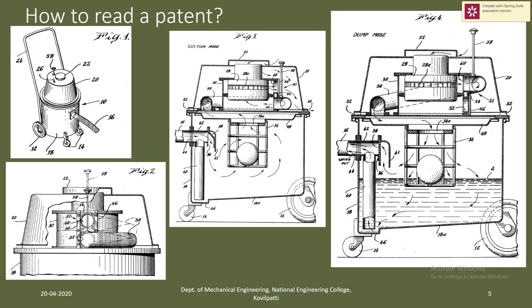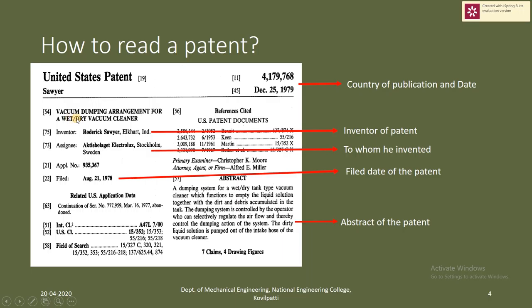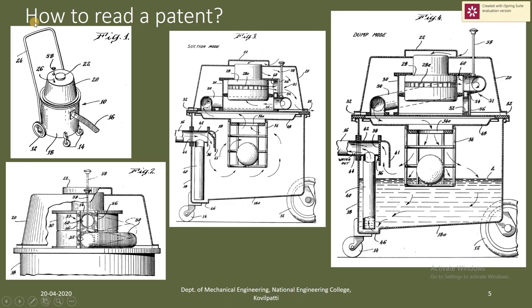In the later pages you will find drawings, which are the main features in most design patents and product design patents. The drawings show the design of the idea, with an overall diagram and more detailed views. For example, I have taken a patent for a wet-dry vacuum cleaner — figure one shows the overall picture, while figures two, three, and four show magnified or sectional views of the working principle.